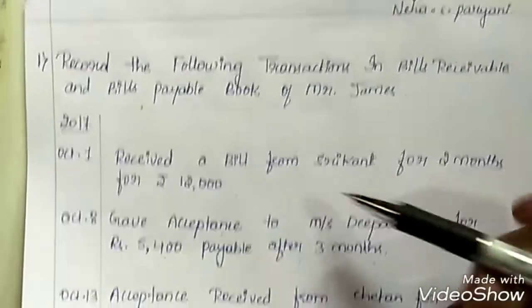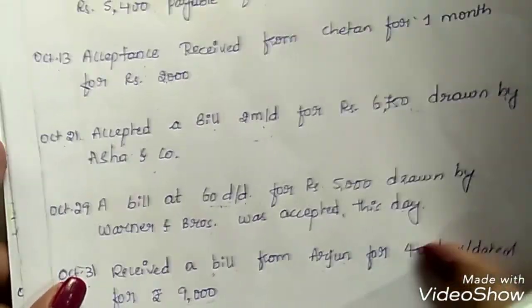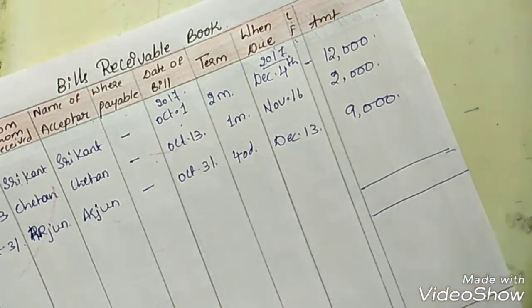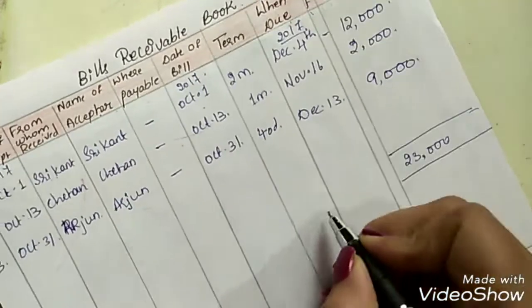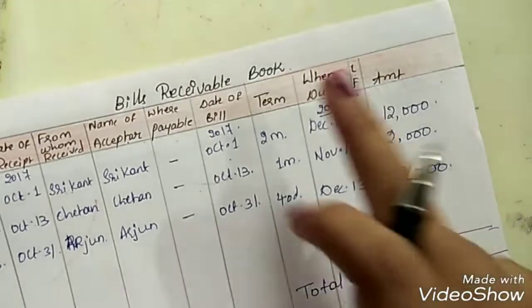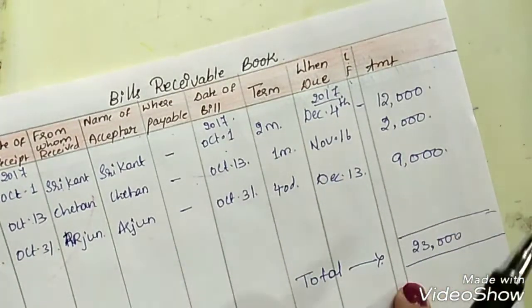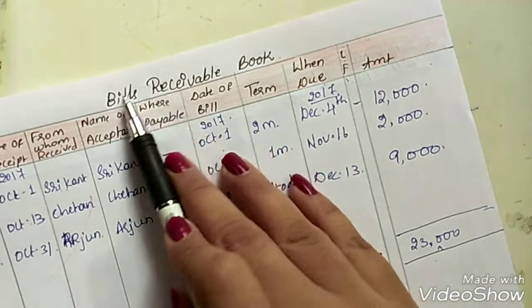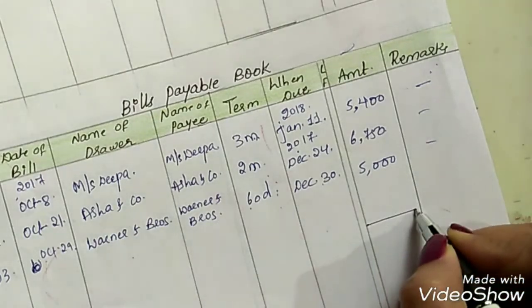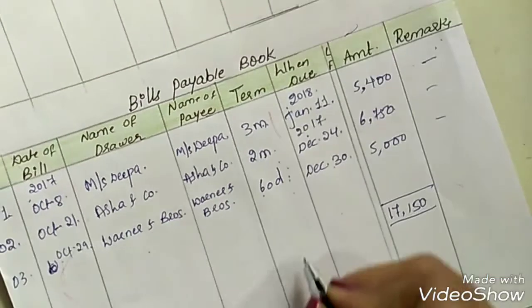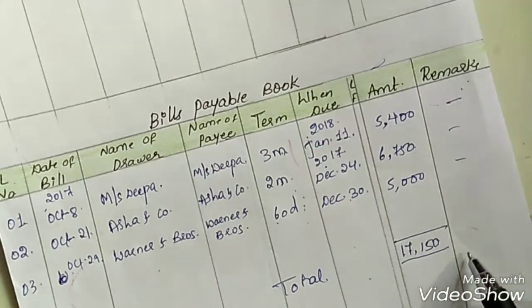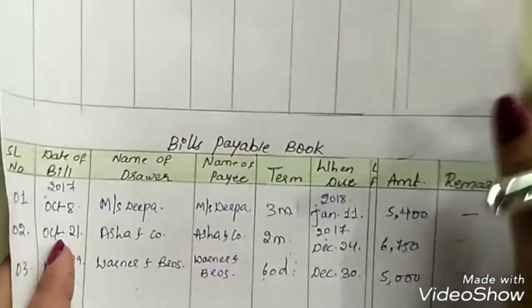Now that all transactions are recorded, total the amount columns at month end. The total of the bills receivable book for October is rupees 23,000. The total of the bills payable book for October is rupees 17,150. Totals are done only at month end after all transactions of the month are recorded.